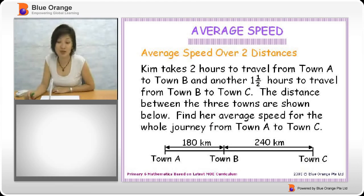Let's look at this question. It looks like a very long question, but let's read it first. Kim takes two hours to travel from town A to town B and another one and a half hours to travel from town B to town C. The distance between the three towns are shown below. Find her average speed for the whole journey from town A to town C.